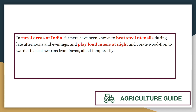In rural areas, farmers are beating utensils, banging steel vessels, playing loud music at night, and lighting fires at various places to try to drive away the locusts, and in many places this traditional method is proving to be quite successful.